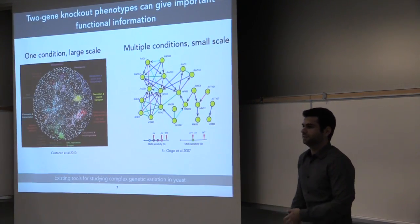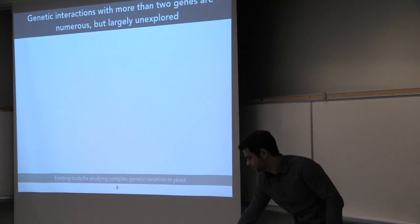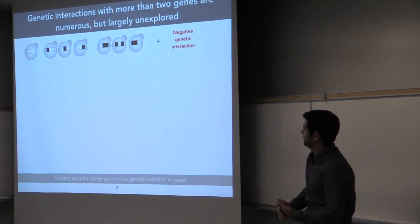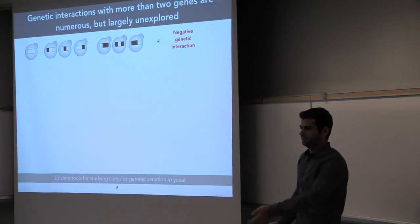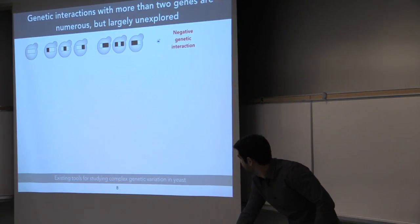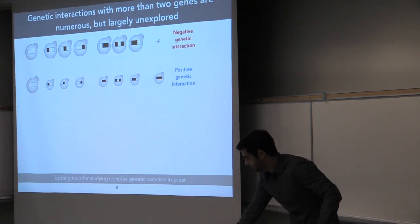But of course, just because we stop at two genes doesn't mean that these can't exist in a more complex manner. So for example, you can have three genes which only give you a sick cell if all three of them are combined in a given cell. Or again, analogously, any combination of three genes which give you the same phenotype in any way you make them.